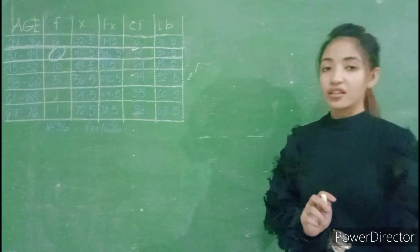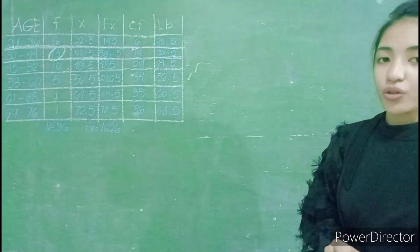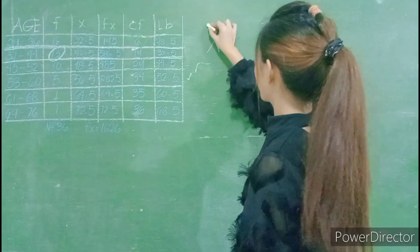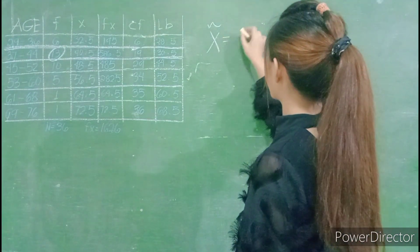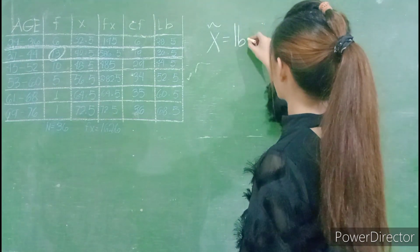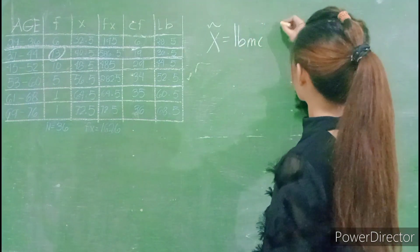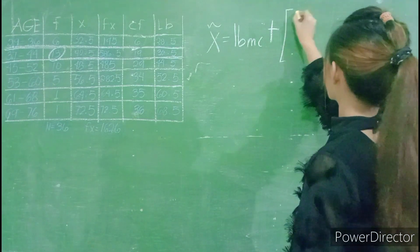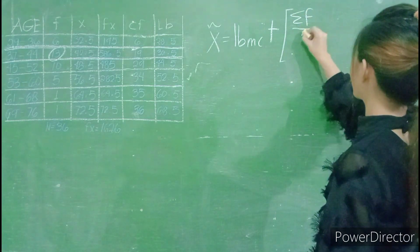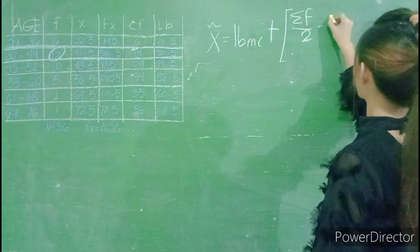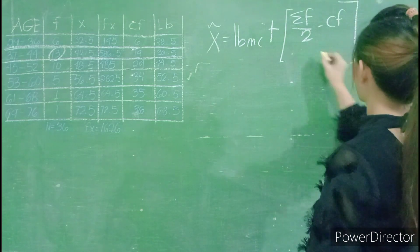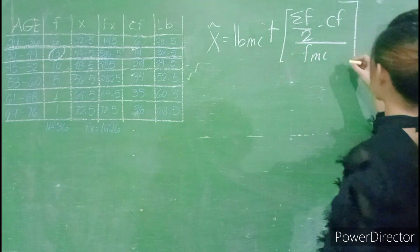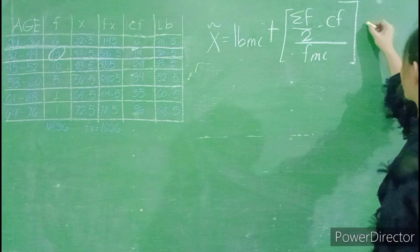After finding the value of our mean, let us find the value of the median. Our median is x equals the lower boundary of the median class plus the summation of f divided by 2 minus the cumulative frequency, divided by frequency of the median, and multiply it by the class width.